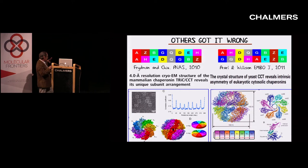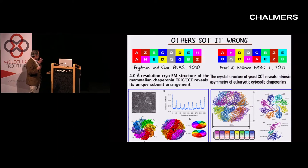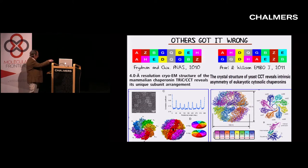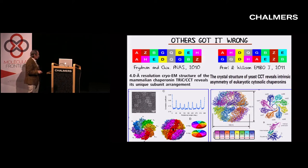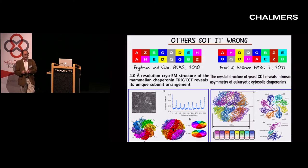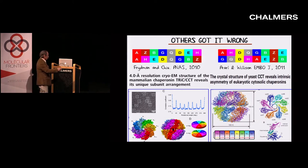They did a massive cryo-EM study — they looked at about a million single particles. They thought they could get the right arrangement from the dyad axis which they thought they'd found, and they came up with their arrangement. Another group, Pearl and Willison in England, used crystallography. They crystallized this huge object and managed to collect data at 3.8 Ångström resolution, solved the structure, and came up with a different order.